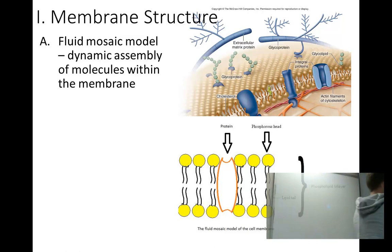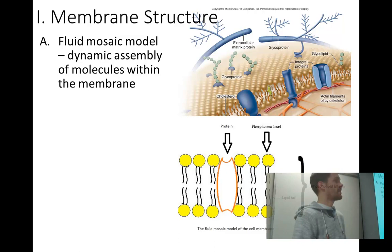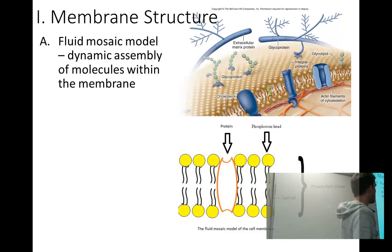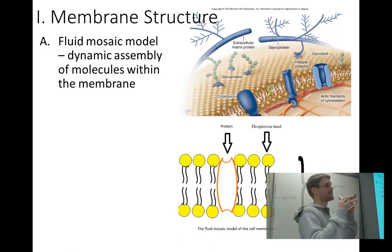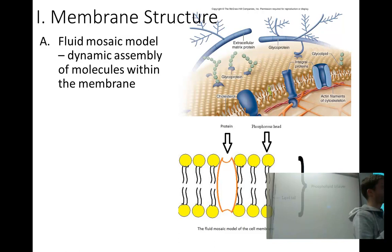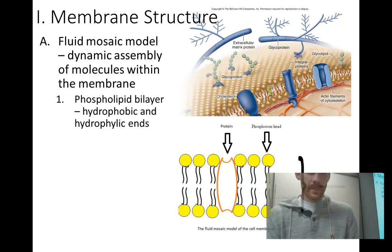For a long time the chemical composition of the cell membrane was a mystery. But we found that phospholipid bilayers will naturally occur if you have a phospholipid, and so that was the basic structural component of our cell membrane. We've come up with a model called the Fluid Mosaic Model. Fluid because it's not like concrete — it's moving, and parts within it don't stay constant. Mosaic means it has a lot of different parts; it's not all made of one thing.